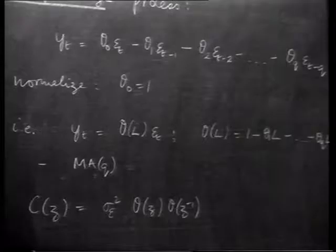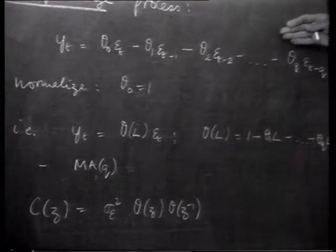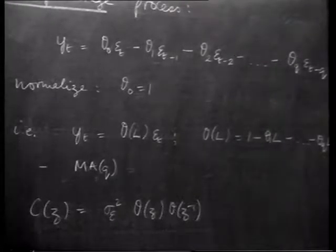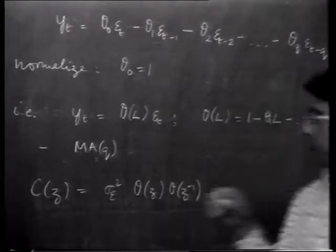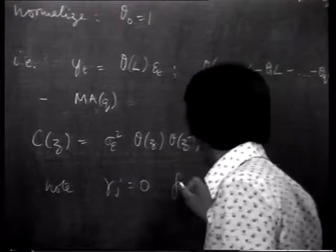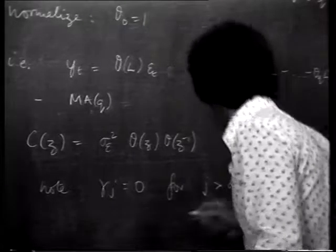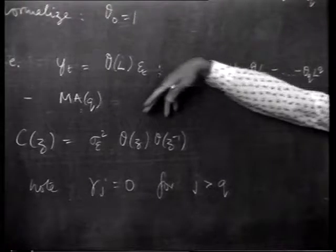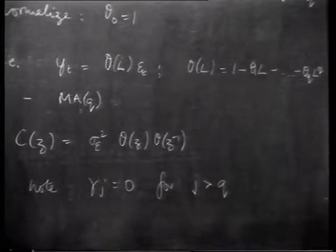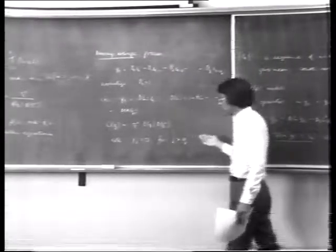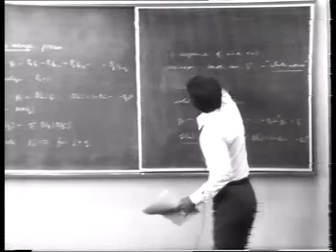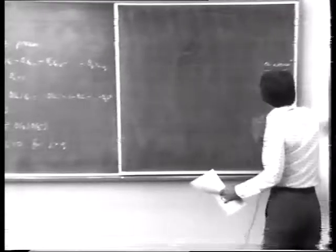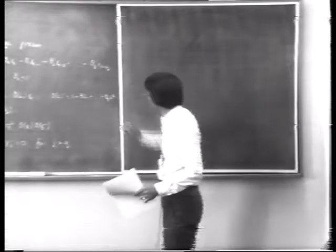The autocovariance generating function c(z) for the MA(q) is sigma_epsilon squared times theta(z) theta(z inverse). A particular feature to note is that the autocovariance is zero at any lag greater than the degree q of the process — that is, gamma_j equals 0 for j greater than q. This is clear from the polynomial product, or equivalently by looking at the expected value of y_t times y_{t-j} for j greater than q.